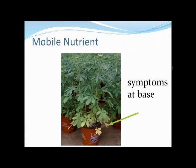Here you see a Calibrachoa with lower leaf yellowing. It's a nitrogen deficiency — the plant needs nitrogen at the top and is reallocating the nitrogen from the bottom leaves up to the top of the plant.